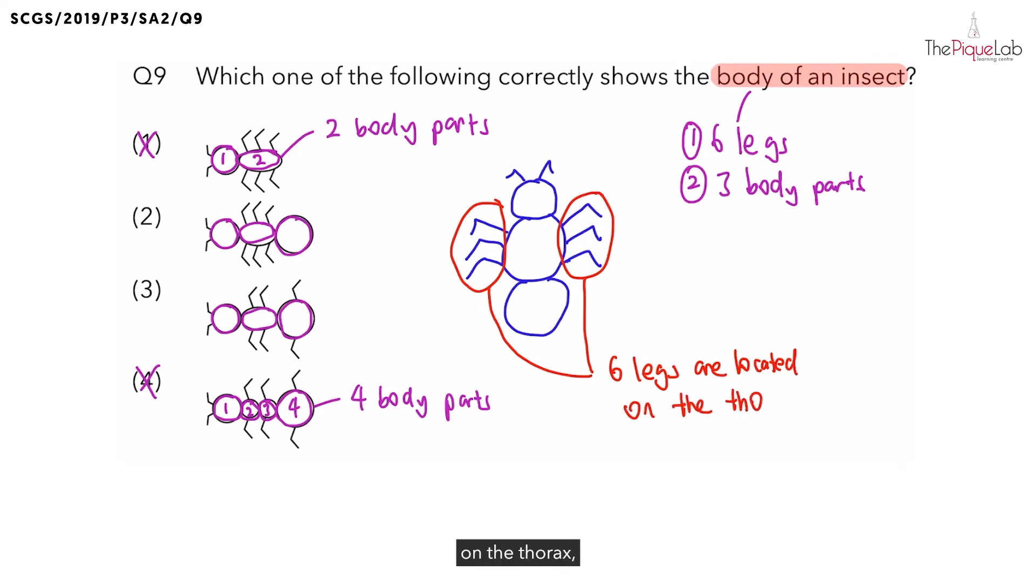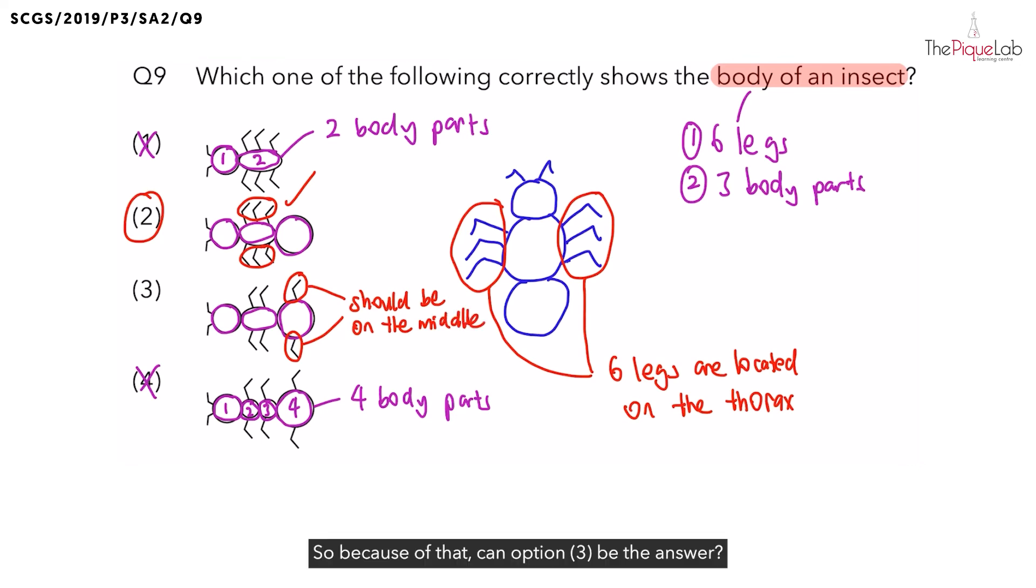So now let's take a look at option 2 again. Now are all six legs located on the thorax? Yes, we can see very clearly option 2 must be correct. But what about option 3? Are all the six legs located on the thorax? No, you can see that there is one pair of legs that are located at the last body part. However, we know that it should be on the middle. So because of that, can option 3 be the answer? No. Therefore, the correct answer should be option 2.